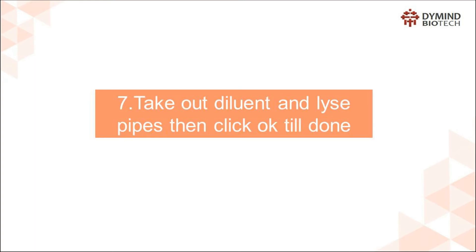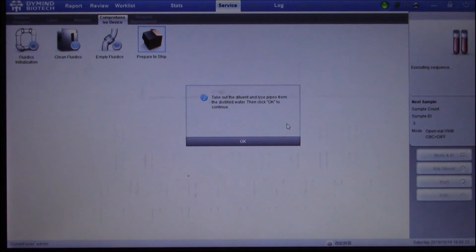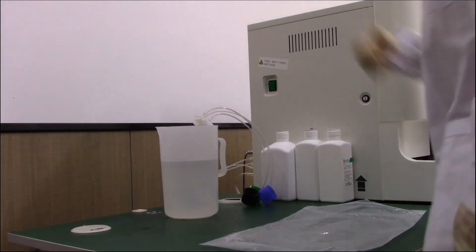Step 7: Take out diluent and lyse pipes and click OK. It will remind prepare to ship done. Please power off the analyzer.